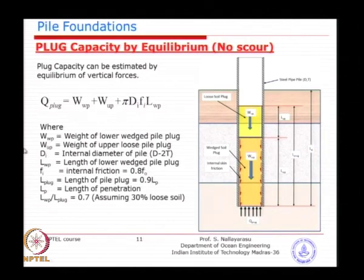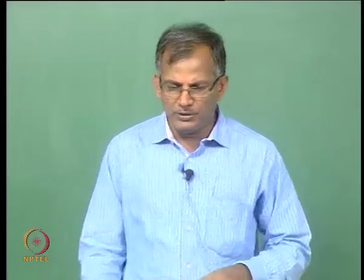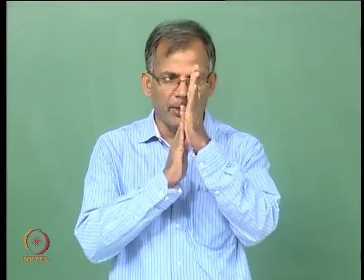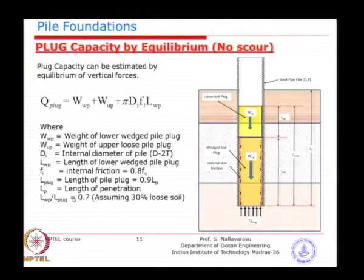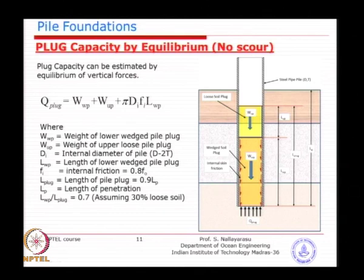We need to understand two things: internal friction and external friction. The internal friction is taken as 80 percent of the external friction. The soil within the pile is confined, so the development of 100 percent friction is questionable. Generally we assume lower friction capacity of the internal pile surface to soil compared to the external surface to soil — normally about 80 percent. The length of the pile plug is typically about 90 percent of the penetration, meaning 0.9 LP is the plug height inside.